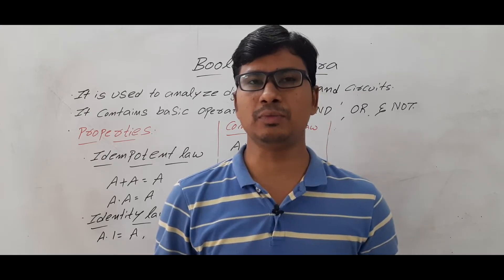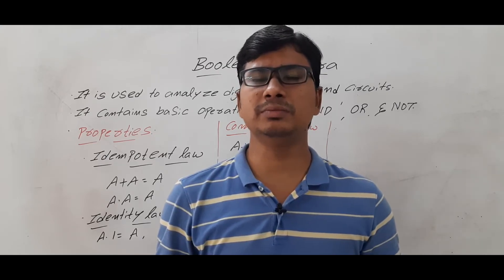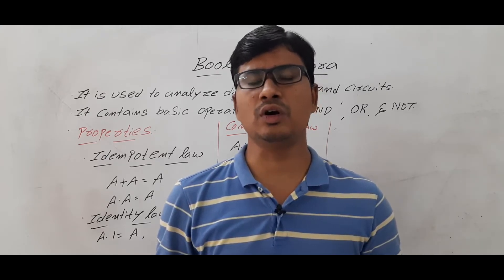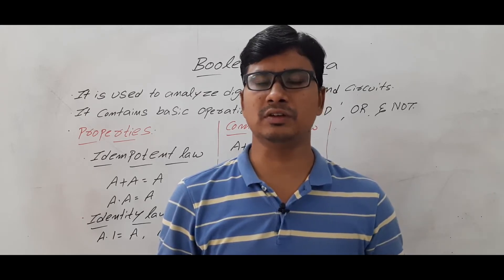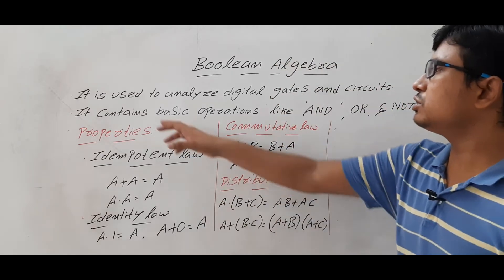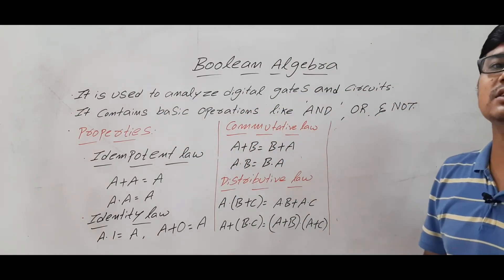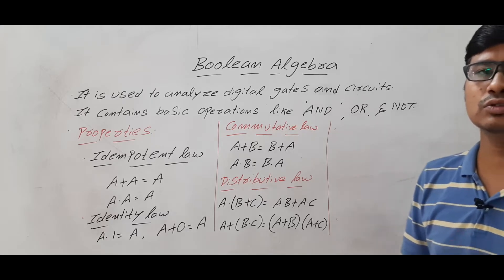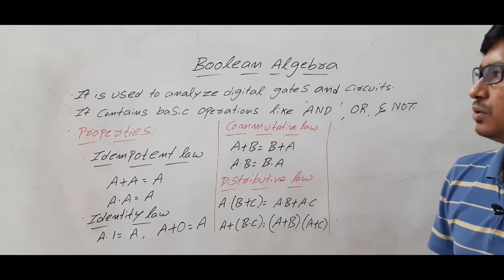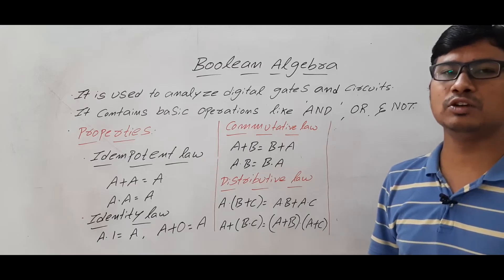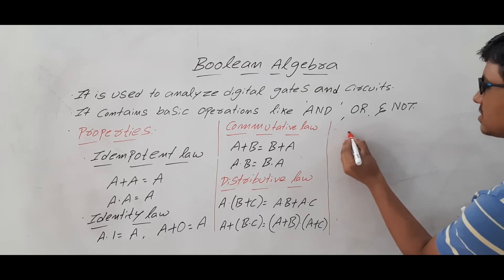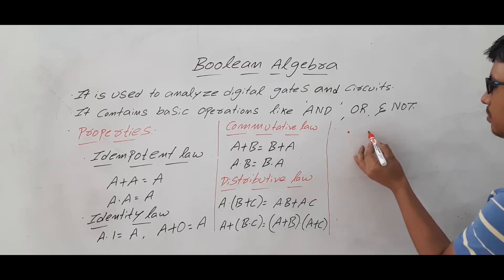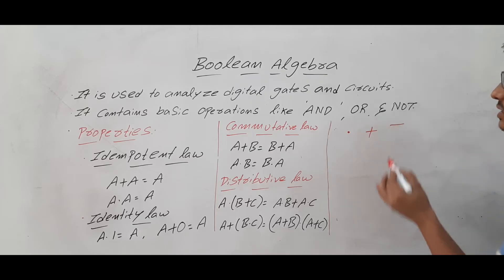In this video I want to discuss Boolean algebra, which is also called switching algebra. We will discuss what Boolean algebra is, where it is required, and then we will discuss a few basic properties. It is used to analyze digital gates and circuits. It contains basic operations such as AND, OR, and NOT. AND is represented as a dot symbol, OR is represented using plus, and NOT is represented with a bar.